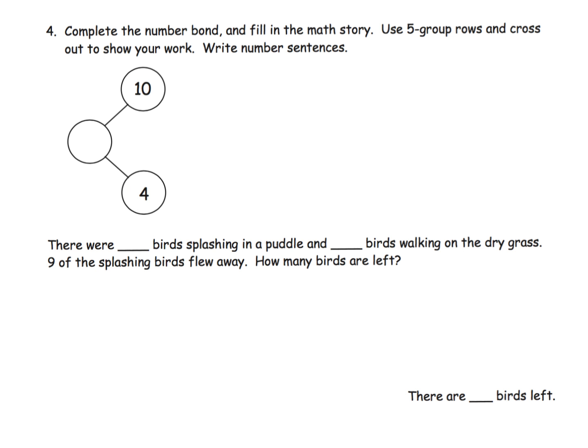And the last example, let's just wrap this up. It says complete the number bond and fill the math story. Use five group rows and cross it off. So first off we know we have 14. And our five group would look like 1, 2, 3, 4, 5. 1, 2, 3, 4, 5. So there's our 10. And then we have 1, 2, 3, 4.